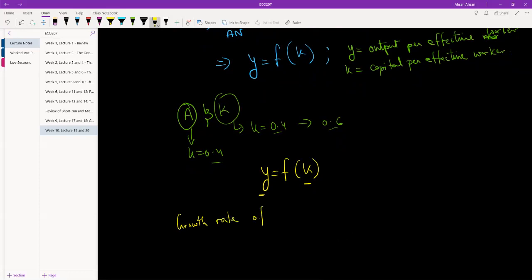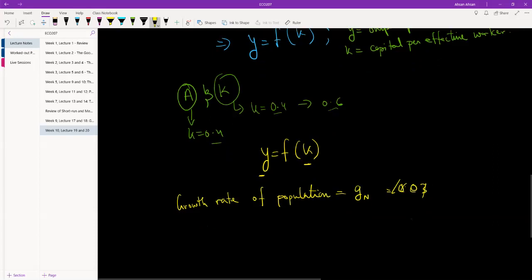So what we are going to do here is this growth rate of population we're going to call this gn. So suppose population is growing at three percent every year, that would mean gn would be 0.03.